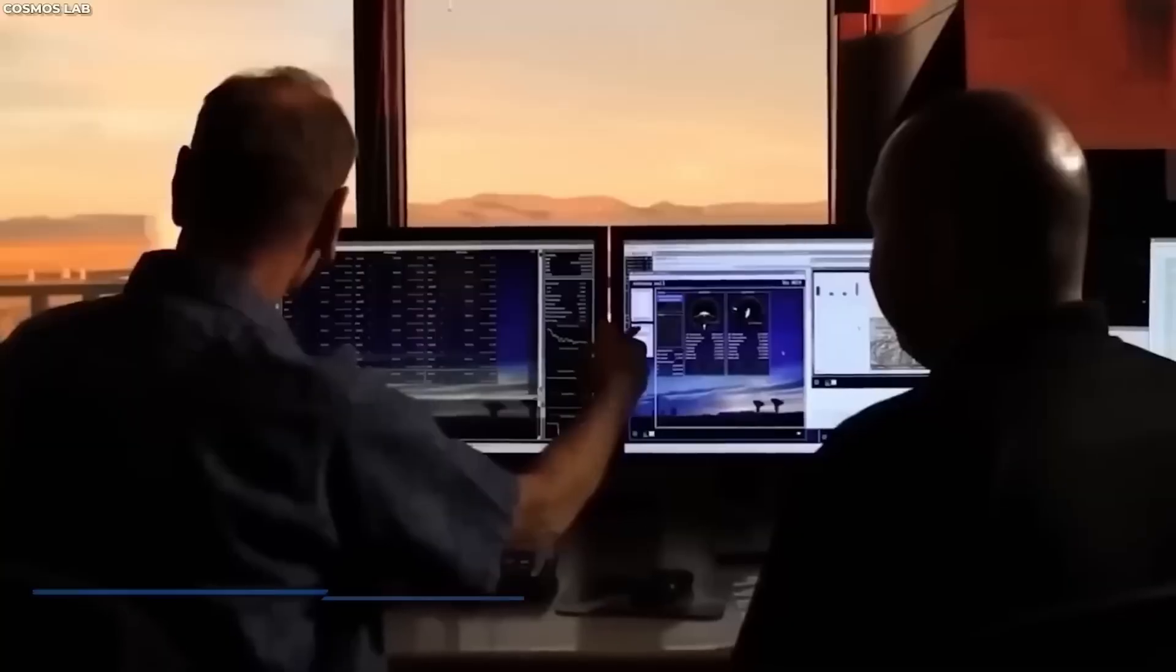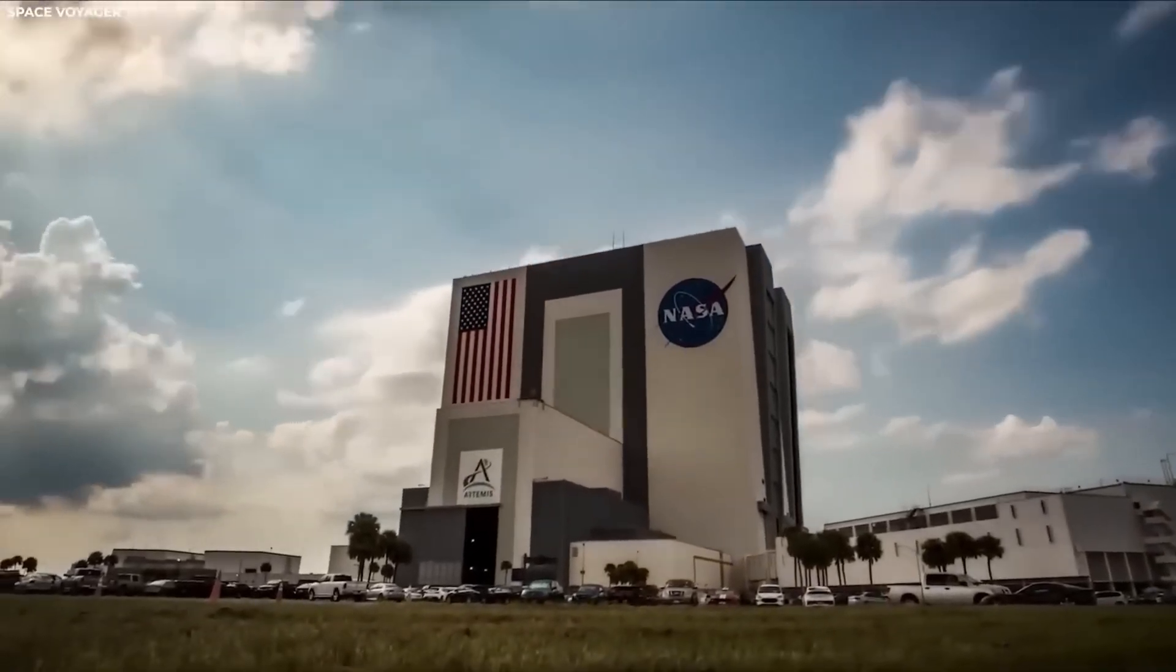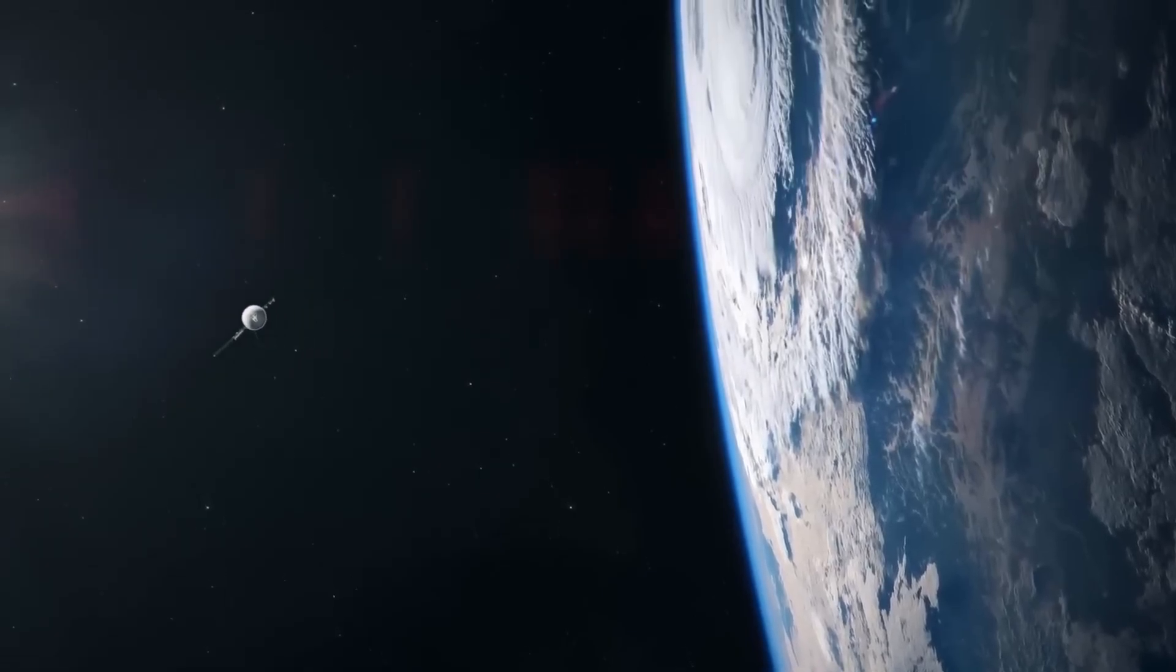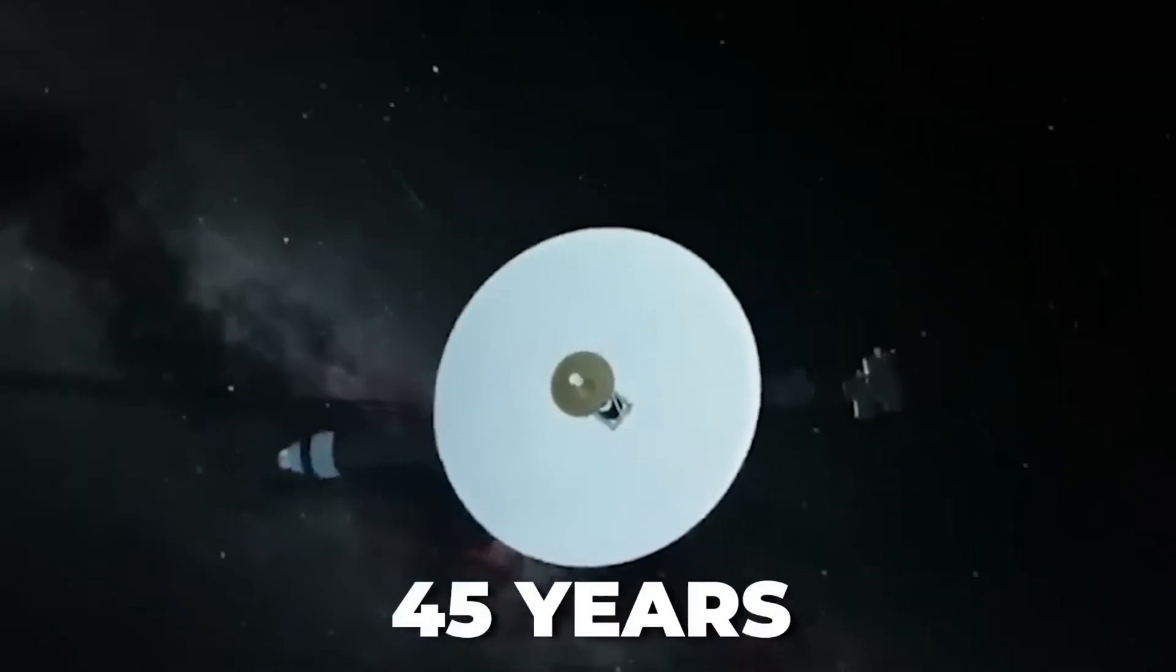This system, called the Attitude Articulation and Control System, AACS, controls the spacecraft's orientation in space and ensures that its high-gain antenna remains pointed at the Earth to send data back to NASA.